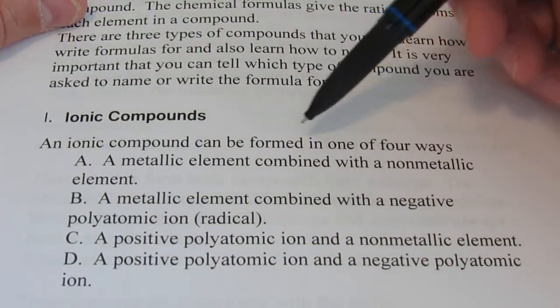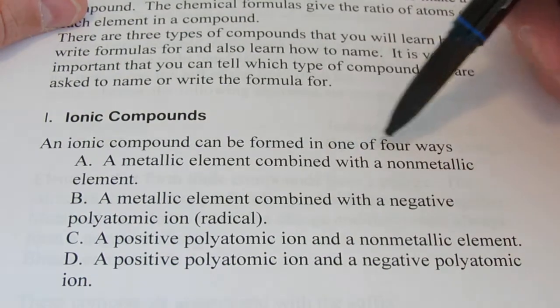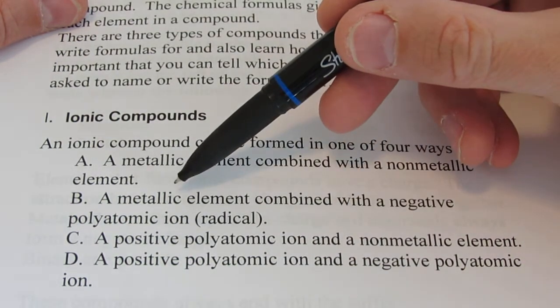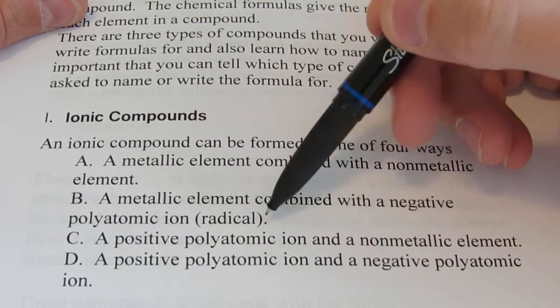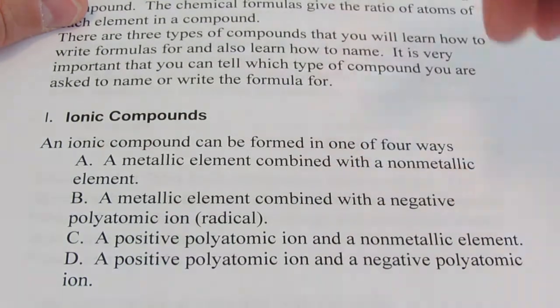An ionic compound can be formed in one of four ways. One, we can have a metallic element combined with a non-metallic element. B, a metallic element can combine with something called a negative polyatomic ion, or radical. I'll introduce you to those in a little bit.